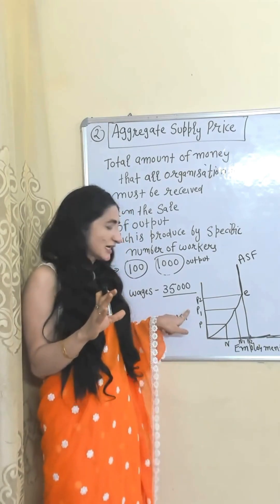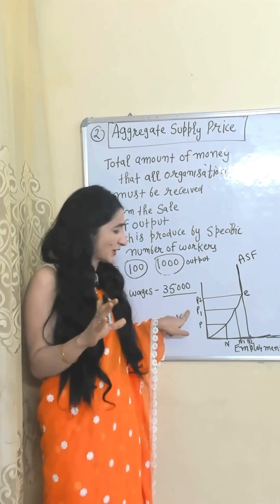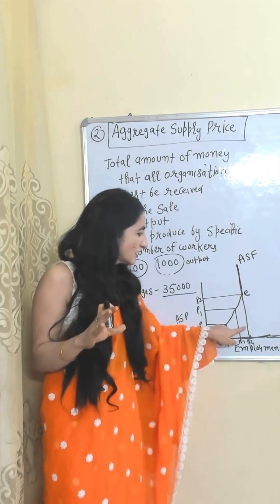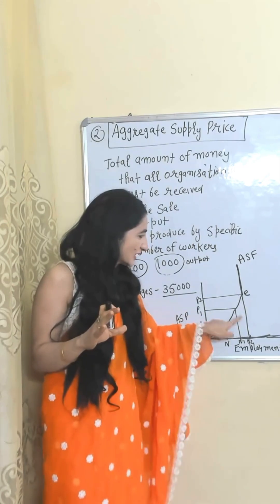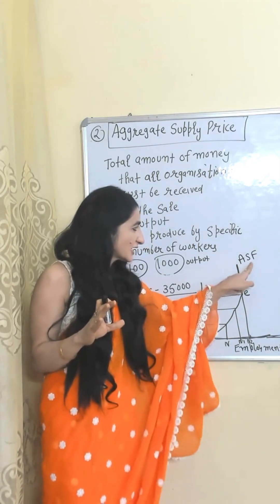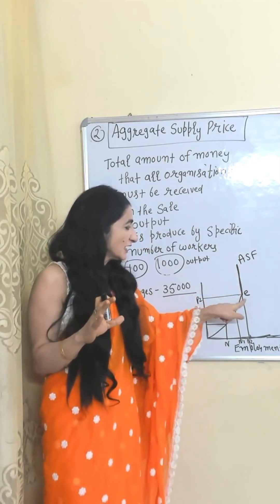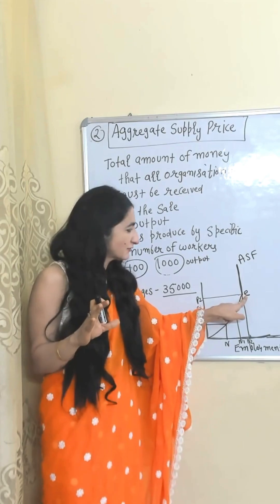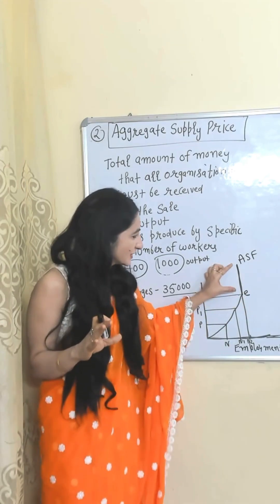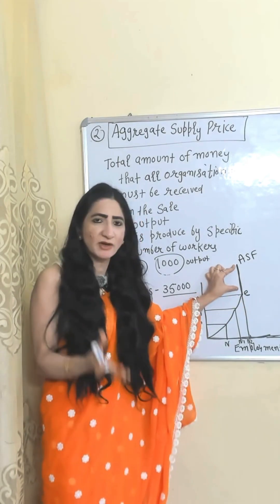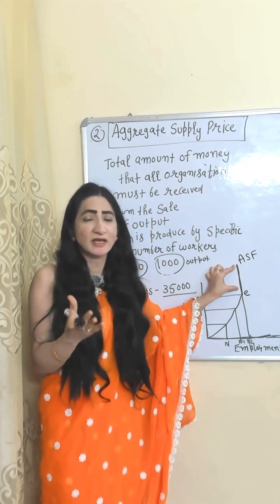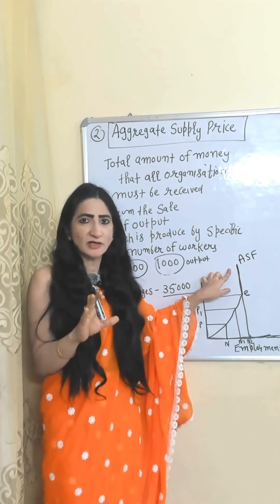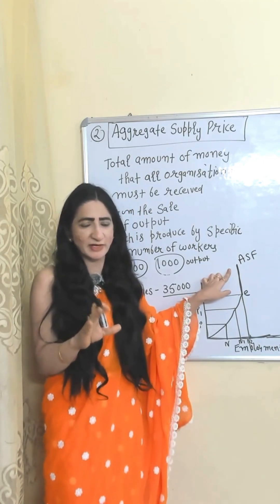Aggregate supply price and employment also have a positive relation — as aggregate supply price increases, employment also increases. The aggregate supply function curve has a full employment point at E. After the E point, the aggregate supply function curve becomes vertical because beyond that point, more workers are not available.